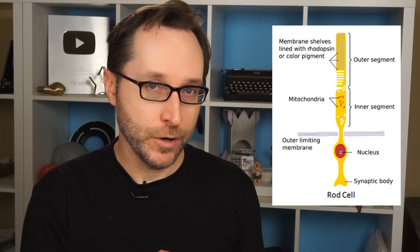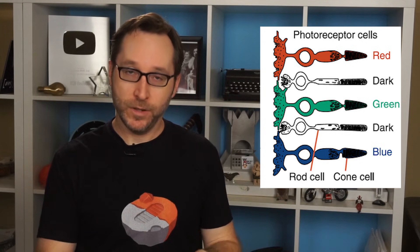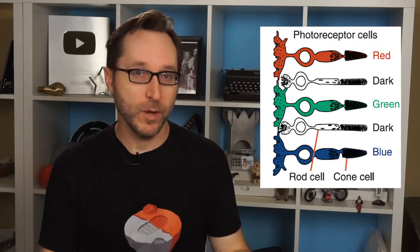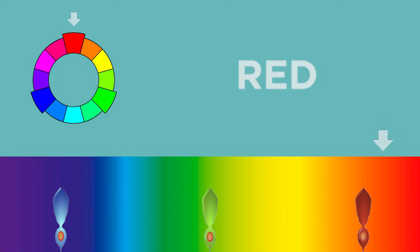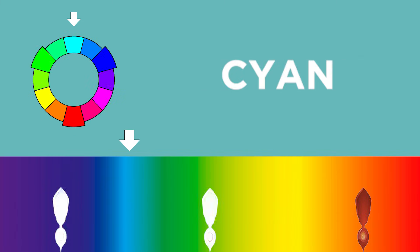Rods only measure the intensity of light — they don't see color at all. The cones, on the other hand, do see colors, and we have three of them: red ones, blue ones, and green ones, all specifically attuned to those wavelengths. This is known as trichromacy. Obviously, we see colors other than red, green, and blue. So when a different wavelength of color enters the eye — say yellow — it activates the red and green cones. Your brain splits the difference, and you see yellow. Combine green and blue, and you get cyan.